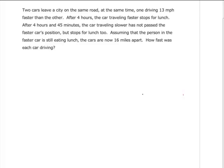Two cars leave a city on the same road at the same time, one driving 13 miles per hour faster than the other. After four hours, the car traveling faster stops for lunch. After four hours and 45 minutes, the car traveling slower has not passed the faster car's position but stops for lunch too. Assuming that the person in the faster car is still eating lunch, the cars are now 16 miles apart. How fast was each car driving?